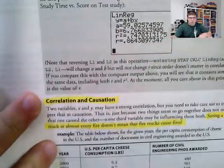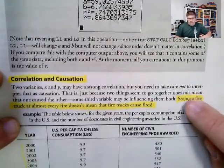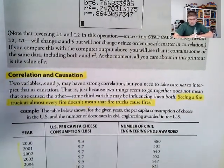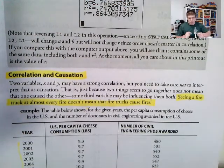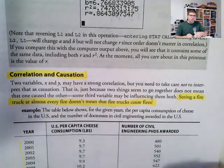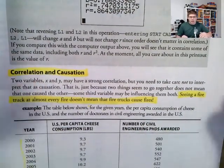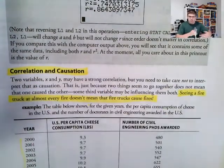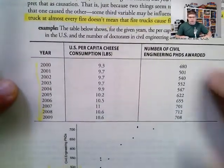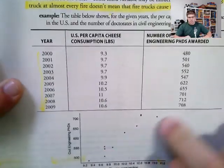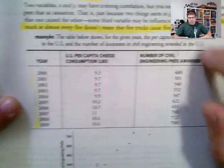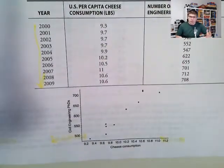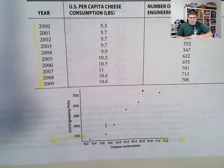This is a big one. Correlation does not imply causation. So they have this seeing a fire truck at almost every fire does not mean that fire trucks cause fires. So we could have fire trucks be our explanatory variable and we could have fires be our response variable. And we could use fire trucks to predict whether or not there's a fire or how much fire there is. There might be a strong correlation, but it's not the fire trucks causing the fires. It could be the other way around. It could be some third variable. So in this example here, they've got cheese consumption is increasing as the number of civil engineering PhDs awarded.